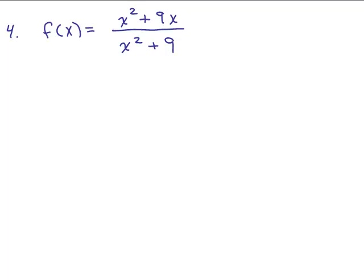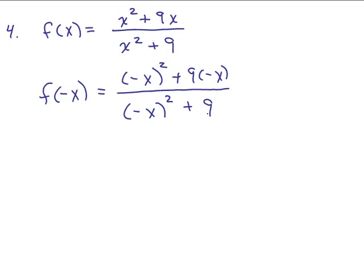Last one. Again, put the video on pause. Try it on your own first. So we're going to plug in negative x for x. So figure out f of negative x. So you have a negative x squared plus 9 times negative x. We have a negative x squared plus 9. So in the numerator, we have x squared minus 9x. And the denominator, we have x squared plus 9. So if you look in the numerator, the numerator is not the same, and it's also not the opposite. So without even considering the denominator, if the numerator isn't either at least one or the other, it's not going to work out. So this also is neither.